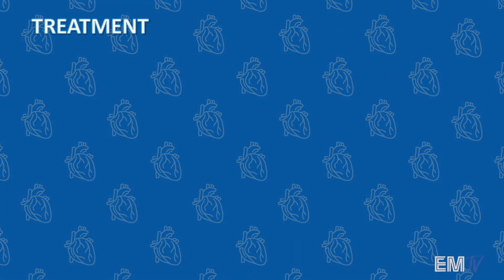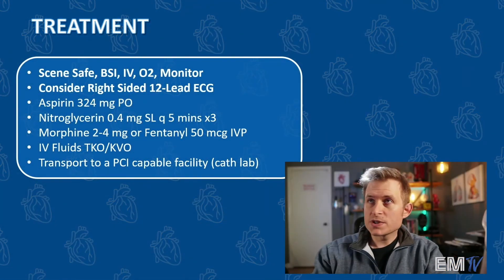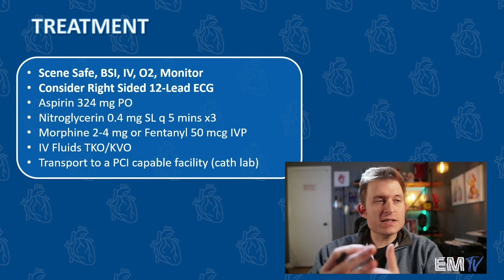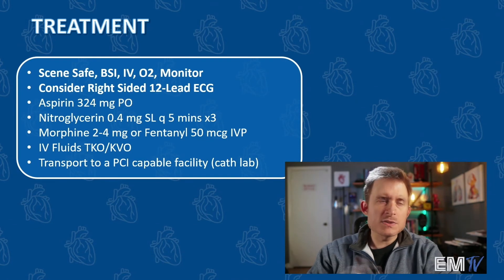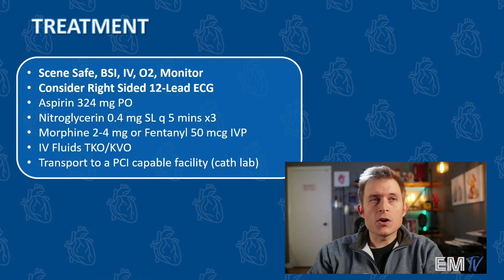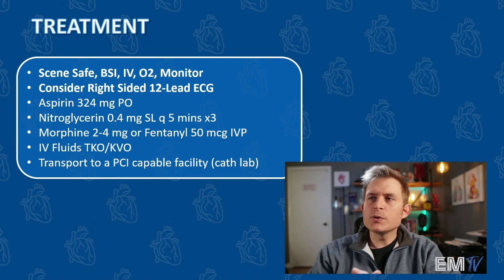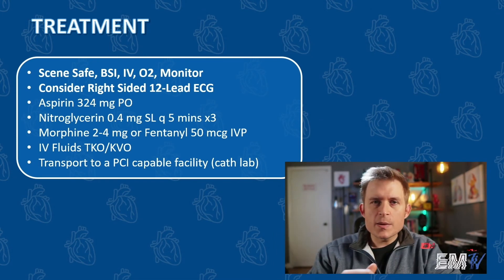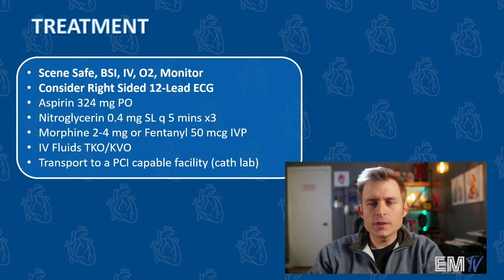Treatment of this patient will go as follows. Of course you're going to recite the mantra: Scene Safe, BSI, IV, O2, Monitor. The next thing I'm going to do is consider a right-sided 12-lead ECG, because 50% of inferior MIs are right-sided. This is important because right-sided MIs are preload dependent — if you give a nitrate, which reduces preload, you'll actually make the patient's condition much worse. This is not likely a right-sided MI since those are generally bradycardic and this patient is tachycardic, but it should still be noted for a static cardiology card.